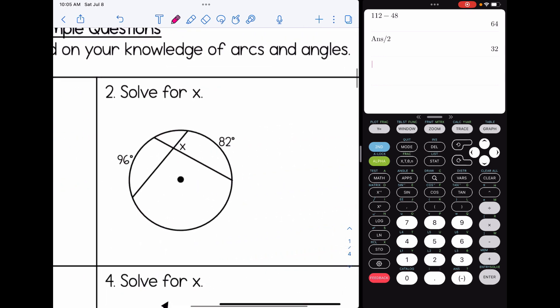Number two, the vertex is in the circle. So we're doing half the sum of the arcs. So 96 plus 82 divide by two. When I add those up, I get 178. Divide by two, and x is 89 degrees.